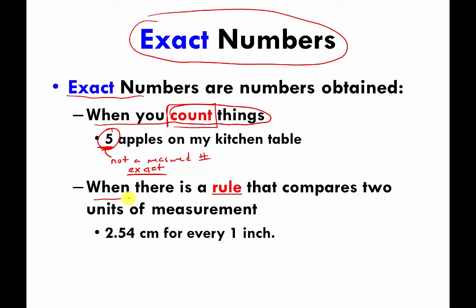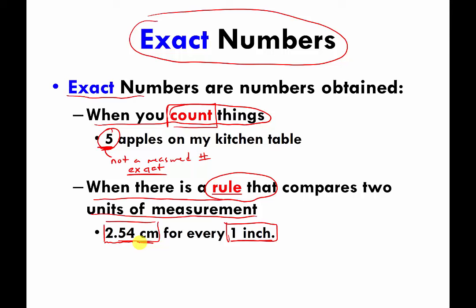Exact number Type 2 is a number that you get when someone or some group of people make up a rule that compares two units of measurement. For example, 2.54 centimeters of length equals one inch. The reason this is true is because some committee got together a long time ago and said they needed to relate these two units of measurement and tell people how many centimeters there are in a single inch. So they made up the number 2.54 centimeters. Because it's a made-up rule, this is also considered an exact number — even though it looks a bit messy.